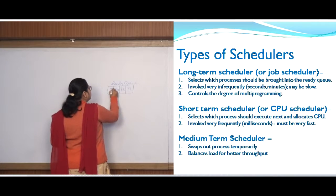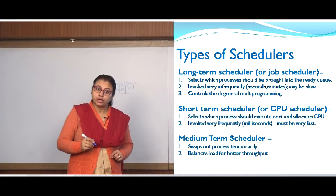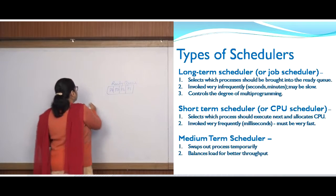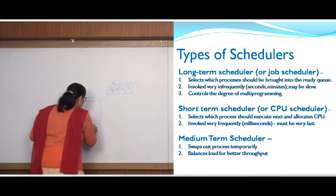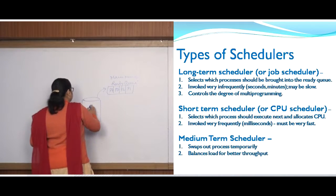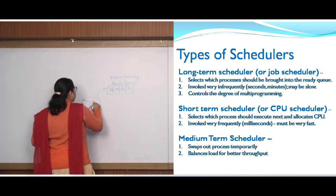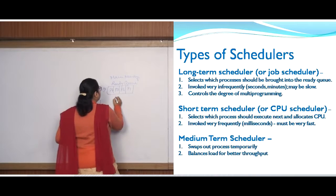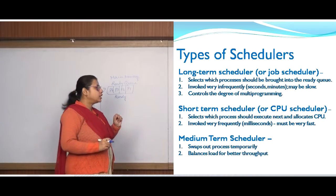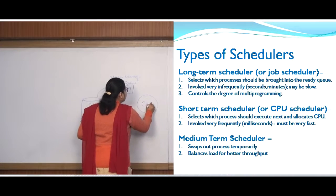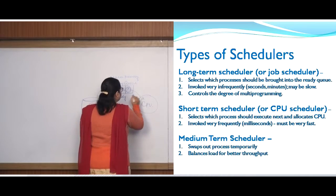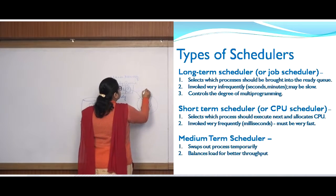The degree of multiprogramming is four, as four processes are inside the ready queue. These four processes have been taken from the disk to the main memory and are now ready processes. Out of these four ready processes, which process will come inside the CPU is the responsibility of the CPU scheduler. Say process P1 is taken inside the CPU — this is done by the CPU scheduler.